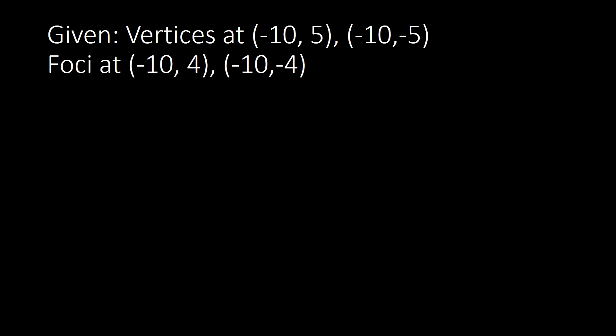Next example: vertices at (−10, 5) and (−10, −5), and foci at (−10, 4) and (−10, −4). First, we identify the important things needed: orientation, center, A so we can have A squared, and B so we can have B squared.